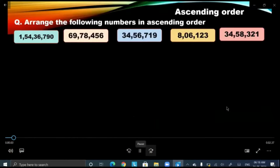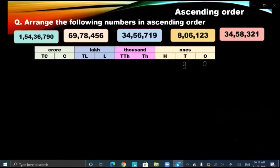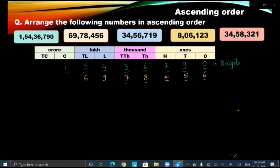Children, hear the question: arrange the following numbers in ascending order. Let us write down the numbers in the chart according to their period. If we count all the digits in the number, the first number is an eight-digit number. Let us write down the second number — counting its digits, it is a seven-digit number. We write the numbers from right side to left side so that we do not make any mistakes.